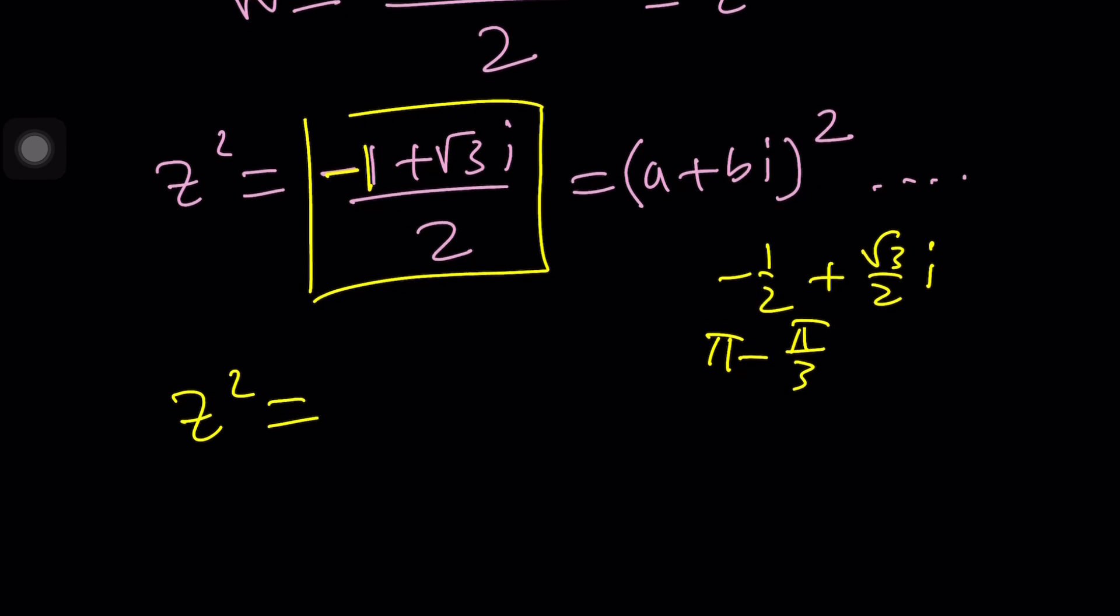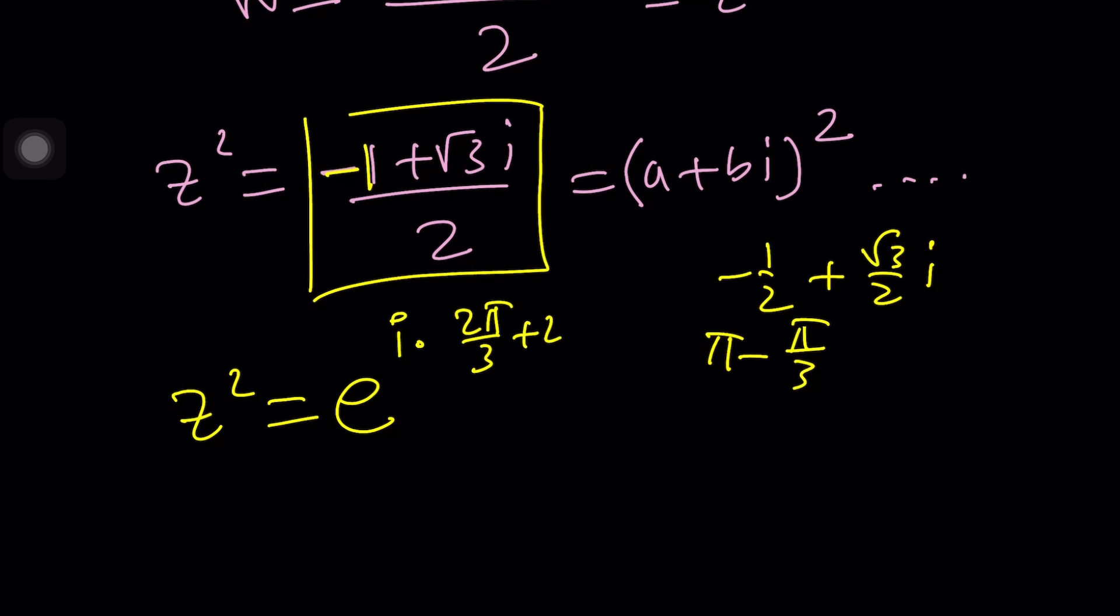Anyway, so this can be written as, since the modulus is one, e to the power i times two pi over three. But I also want to add the multiples of, oh, I added an extra i. I want to add the multiples of two pi because we're going to take square roots and we do need multiple values.